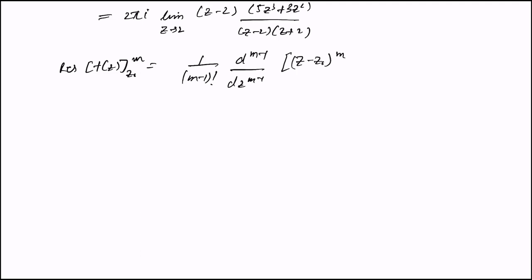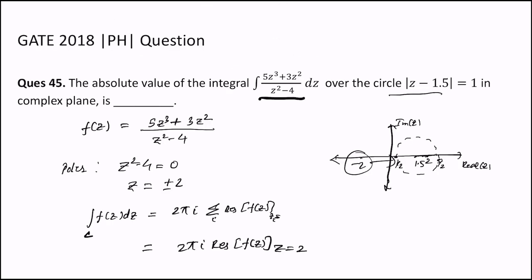There is a limit z tending to z₀. So using this formula, since in this case the order of pole is 1, so m = 1, this derivative term vanishes out.